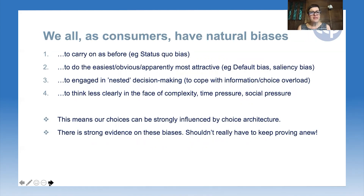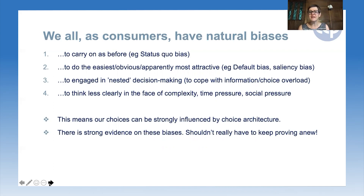We also have a natural bias to engage in nested decision making. It can be very, very hard to decide too many things at once. We're not very good at information overload and choice overload. So what we tend to do is package decisions up into individual decisions that we can do in a sequential way. Once we've made a first decision, that sometimes limits the decisions we have to make later on — which is why we do it. But it also means that in the end we may not make the optimal decisions, but rather a satisfactory decision. Essentially, we're satisficing.